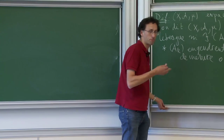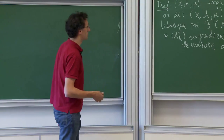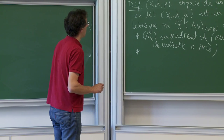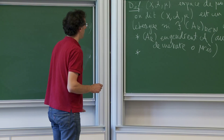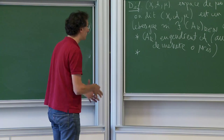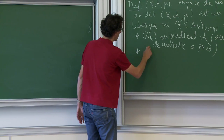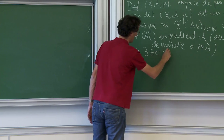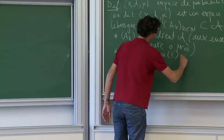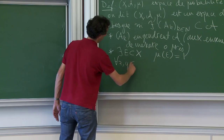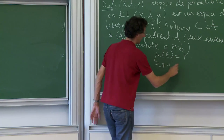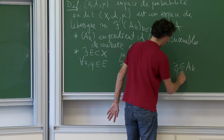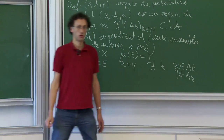Dans les faits, il n'y a pas tellement de difficultés posées par ça, mais dans le langage on est obligé d'être prudent. Je veux pouvoir zoomer sur les points — c'est-à-dire que je veux que la tribu voit bien les points. Ce que je veux dire, c'est qu'il existe un ensemble E inclus dans X de mesure totale tel que pour tout x, y dans E, si x ≠ y, il existe k tel que x appartient à A_k et y n'appartient pas à A_k. On sépare les points à l'aide de ces ensembles.